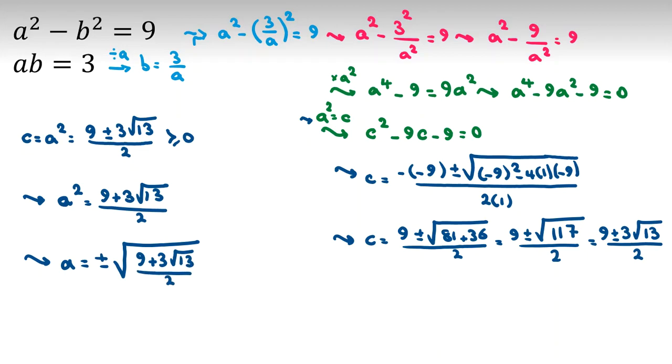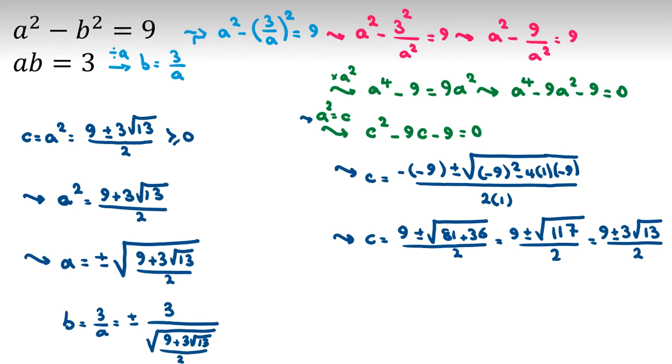Now, as a is this, you consider b. Let's check. We should replace. Because the problem is not symmetric with respect to a and b. Because it is a squared minus b squared. If we had plus b squared, we could use symmetricness. But b equal to 3 over a. So, it will be plus minus 3 over square root of 9 plus 3 root 13 all over 2. And plus is for plus, minus for minus. We have two answers.